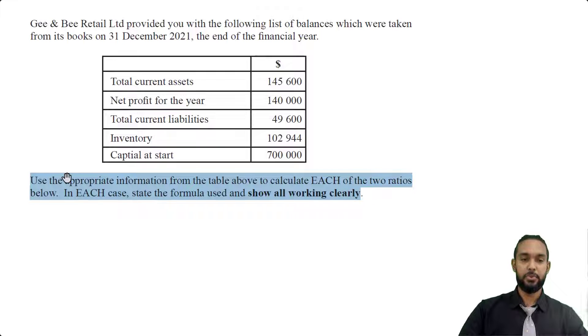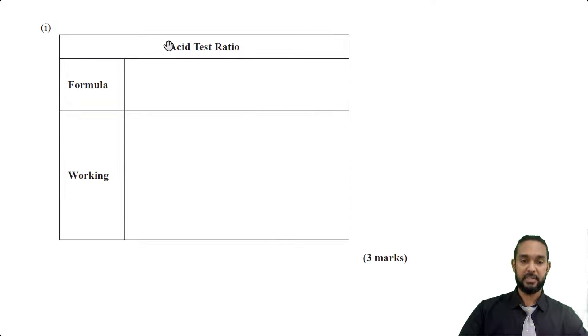It says use the appropriate information from the table above to calculate each of the two ratios below. In each case, state the formula used and show all working clearly. The first ratio they want us to calculate is the asset test ratio which is also known as the quick ratio. And they want us to show the formula and the working.